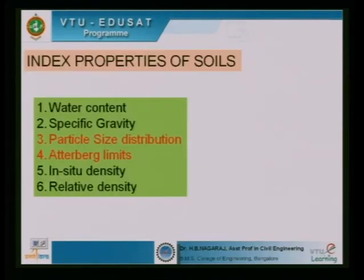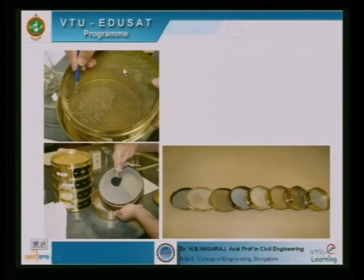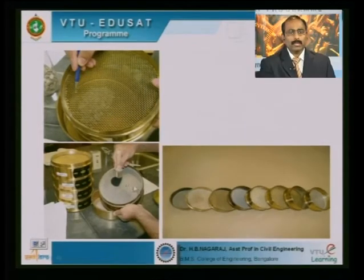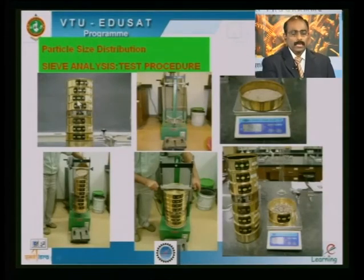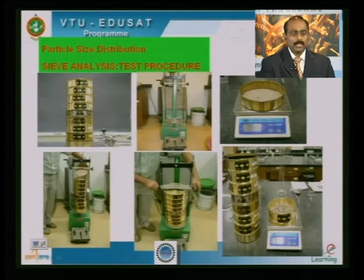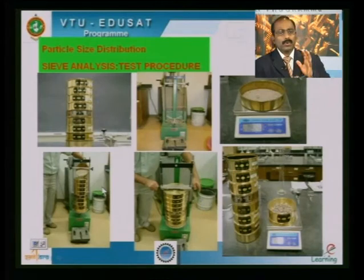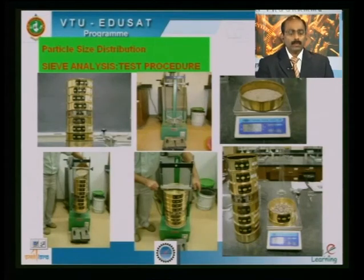For particle size distribution, we take sieves, clean them properly by removing any particles sticking with a wire brush. We arrange them in decreasing order of sieve size and place them on a mechanical sieve shaker, shaking for a specified time — usually ten minutes. The sieve rotates with some base inclination, sieving the soil just as one sieves flour at home.